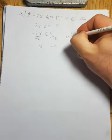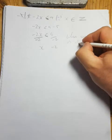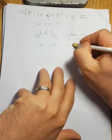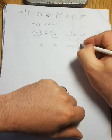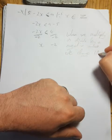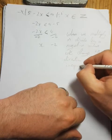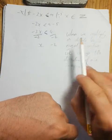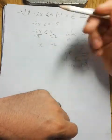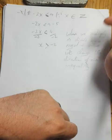This is the big difference: when we multiply or divide by a negative value, we change the direction of the inequality. The direction was 'less than' — we're changing it because we divided by a negative number. So our final answer is x is greater than minus 2.